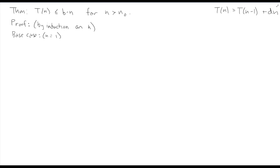In this video I want to take a look at two induction proofs using a recurrence relation to prove both upper and lower bounds. The recurrence relation we're working with comes from a recursive version of insertion sort, where we make one recursive call of size n minus one and then do a linear amount of extra work. I want to do upper and lower bounds, starting with the upper bound.